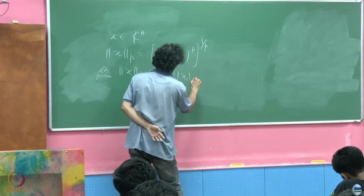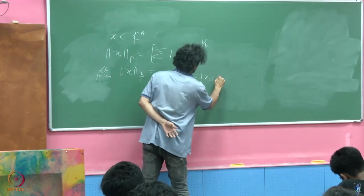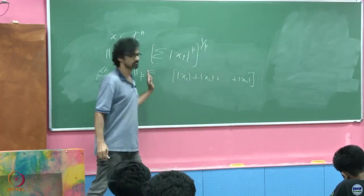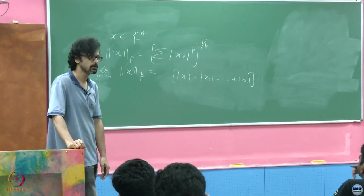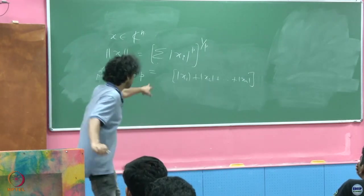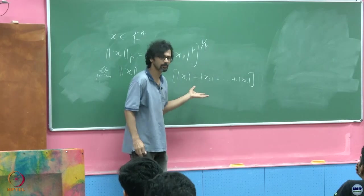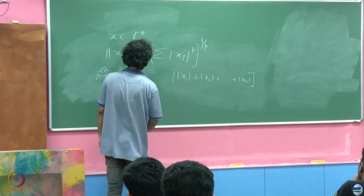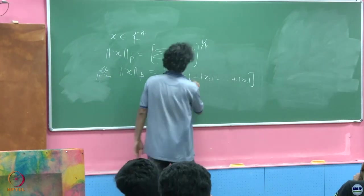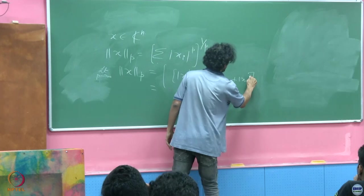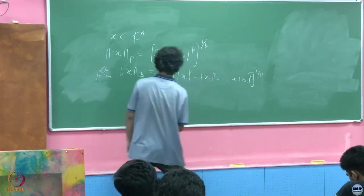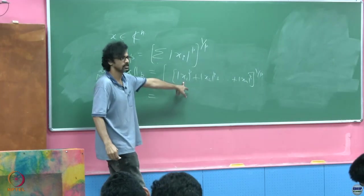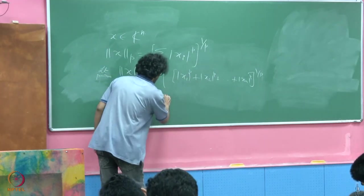This is |x₁| + |x₂| + … + |xₙ| all raised to the power p, then the p-th root. There is at least a maximum among these entries — let us call that m. Pulling it out, as p tends to infinity those ratios smaller than unity go to zero, and we are left with just m.